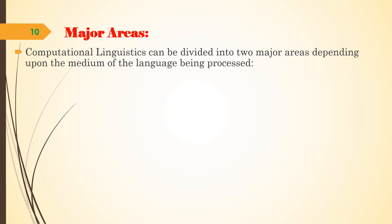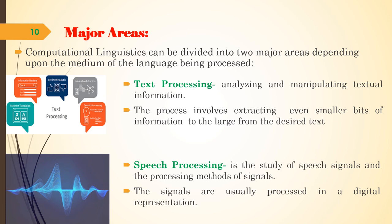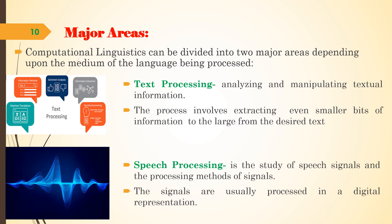Computational linguistics can be divided into two major areas depending upon the medium of language being processed. The first is text processing, which is the process of analyzing and manipulating textual information, involving extracting information from smaller to larger bits from the desired text. The second is speech processing, which is the study of speech signals and the processing methods of those signals, usually processed in a digital representation.